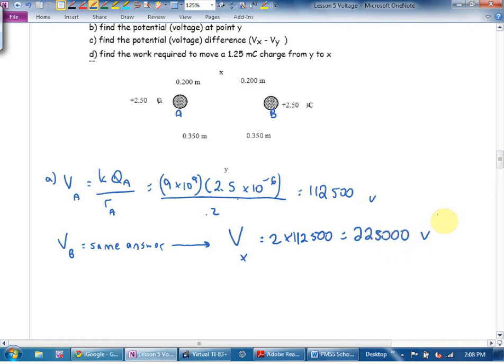What does B want me to find? The potential, in other words, voltage. Well, that's going to be 9 times 10 to the 9th. Still 2.5 times 10 to the negative 6th. But at location Y, I'm going to use this distance here. Which is what? What is this distance here?